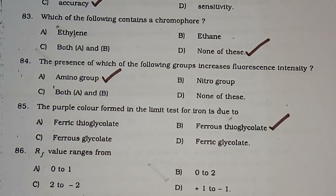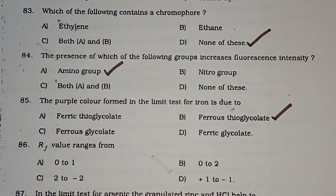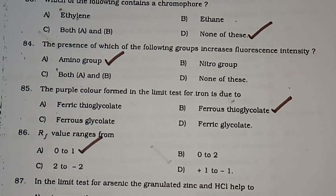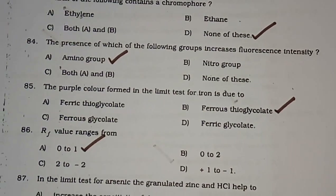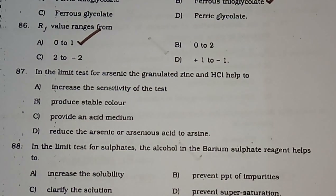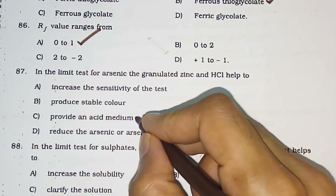Question number 86: Rf value ranges from — 0 to 1, 0 to 2, 2 to minus 2, or plus 1 to minus 1. The correct answer is 0 to 1. Question number 87: In the limit test for arsenic, granulated zinc and HCl help to — increase sensitivity, produce stable color, provide an acid medium, or reduce arsenious acid to arsine. The correct answer is to provide an acid medium.